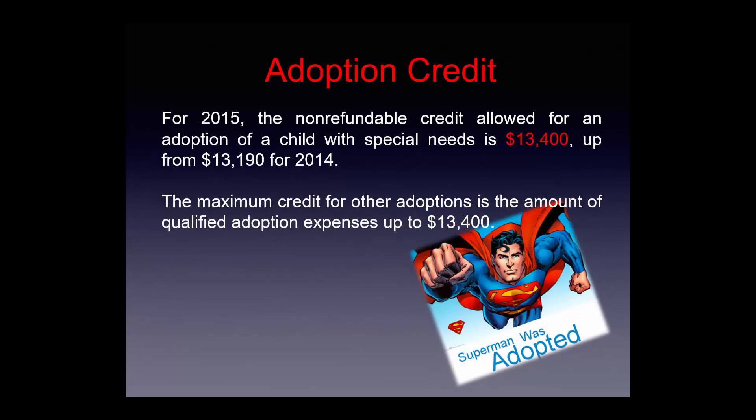The adoption credit changes for 2015: the non-refundable credit allowed for an adoption of a child with special needs is $13,400, up from $13,190 for 2014, and the maximum credit for other adoptions is the amount of qualified adoption expenses up to $13,400.